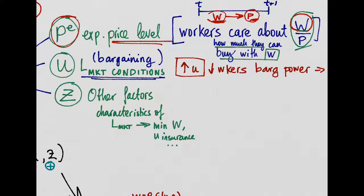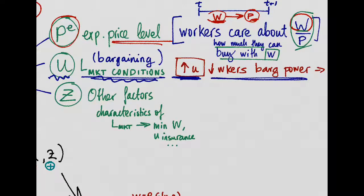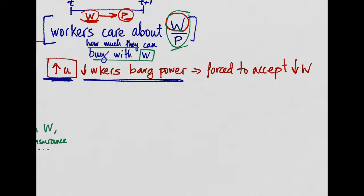Other thing workers should care about is the conditions of the labor market. Since workers have to bargain for wages with firms, their bargaining power depends a lot on the unemployment level of the economy. If there are a lot of unemployed people in the economy, workers will have low bargaining power. Thus, in the process, they will be forced to accept a lower wage.